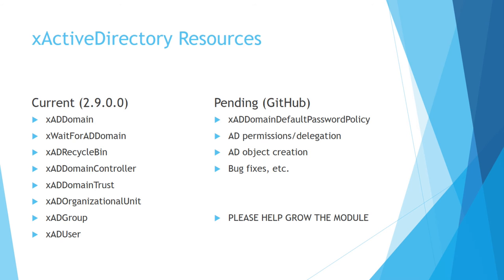You came to talk about Active Directory DSC. This is the xActiveDirectory resource module that you can get from the PowerShell Gallery or you can look at it on GitHub. In that module there are a number of resources. The main thing to understand is the difference between xADDomain and xADDomainController. xADDomain is going to be the first DC in the environment. Every other DC after that in the same domain is going to be an xADDomainController. xWaitForADDomain says once I've done the install I need to make sure it's come up and responding. Then I can do domain trust, organizational units, users, groups, and so forth. Those are the resources in that module today — bare minimum, been out there for about a year and a half.